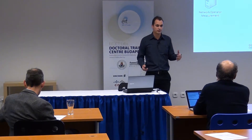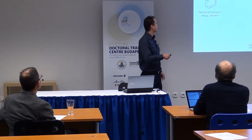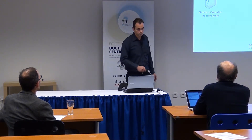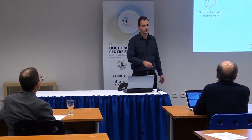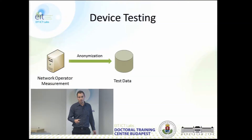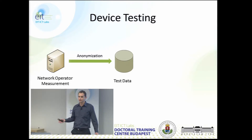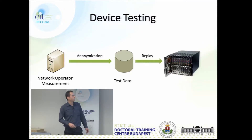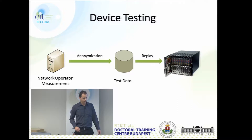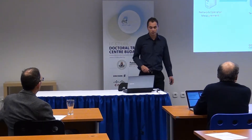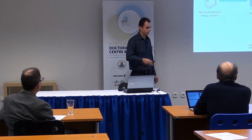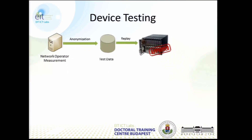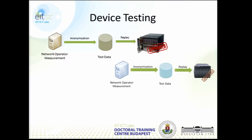If a company wants to test their new product, they usually have a partnership with a network operator. They go to them, take measurements on the real network, but they cannot use it directly — they have to go through an anonymization process because of legal and privacy issues. Then they can use this traffic to replay and test their new device. But the real problem is that different companies with different products take measurements in different places and go through different processes, so the test data is very different.